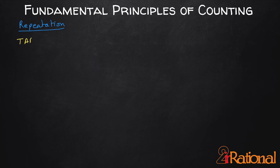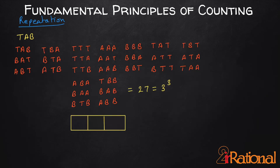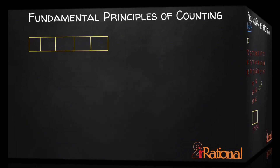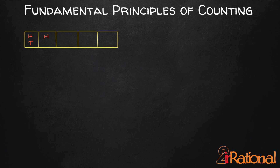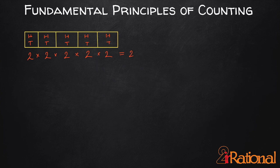Now if we allow repetitions, cases become slightly different. For the letters we were discussing, if we are allowed to use repeated letters, then for each of the 3 spaces we have 3 choices, giving 3³ possible values. Similarly, if we are tossing a coin 5 times, for each of the 5 spaces we have 2 choices — heads or tails — so the total number of ways is 2⁵. When repetitions are possible, the formula is: number of choices raised to the number of spaces being filled.